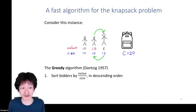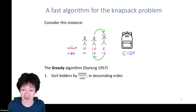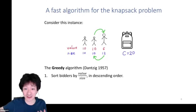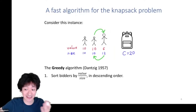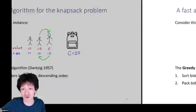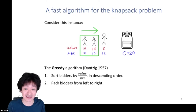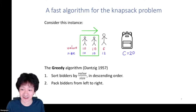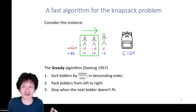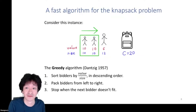The knapsack problem is NP-hard — there's no known polynomial-time algorithm that always outputs optimal allocations. So we could run a greedy algorithm — Danzig's greedy algorithm. We take the bidders and sort them by their value divided by their size in descending order, then pack the bidders from left to right, putting them in the knapsack so long as they fit, stopping when the next bidder doesn't fit.